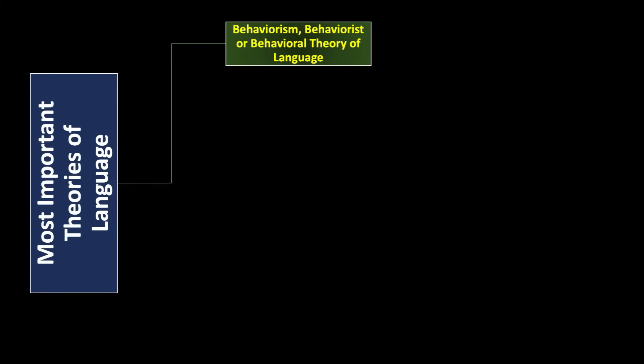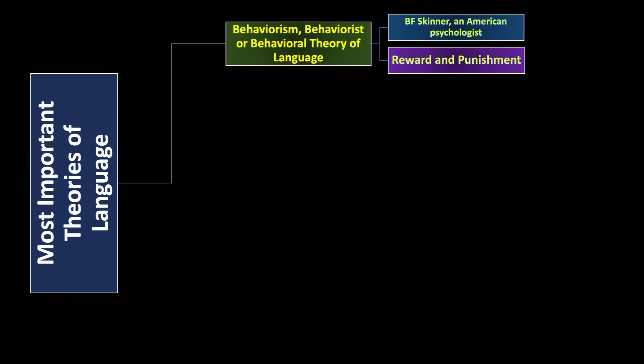The first theory is behaviorism, also called the behaviorist or behavioral theory of language. The person who propounded this theory is B.F. Skinner, an American psychologist. The most important elements in behaviorism are reward and punishment — learning takes place thanks to reward and punishment. Detailed discussion of this concept will come in future lessons; here I am just giving a brief introduction.